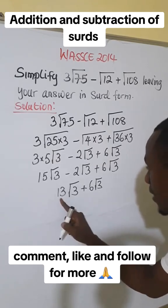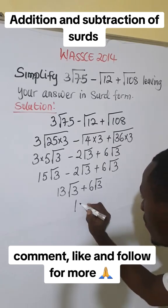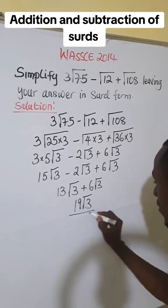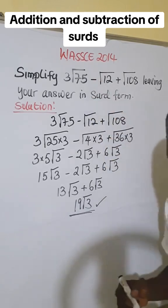We now simplify 13 plus 6. 13 plus 6 will give us 19. Take one of the roots, which is √3. So this is the final answer to this WASSCE 2014 surds problem.